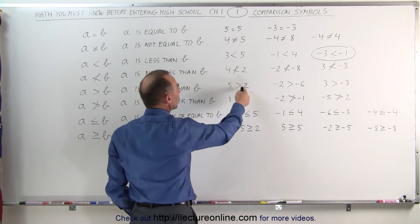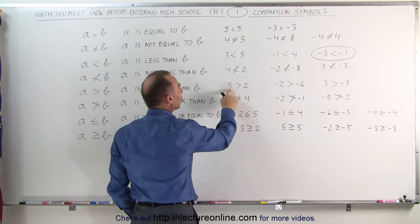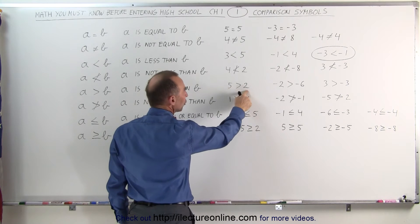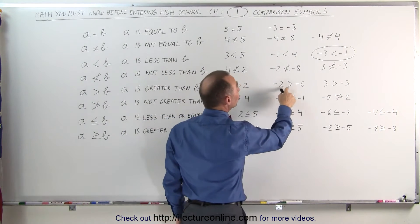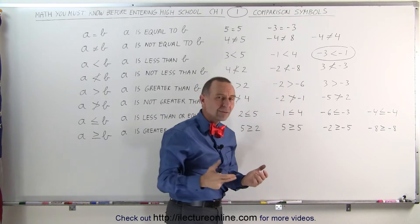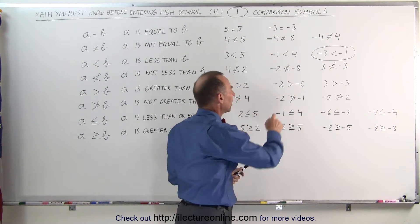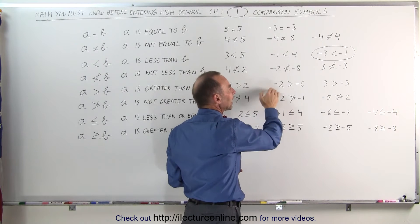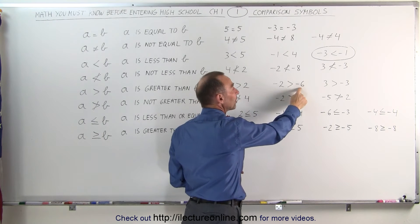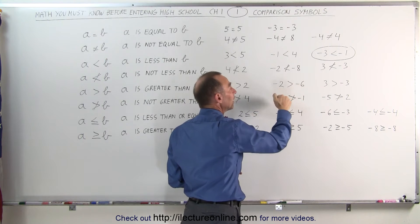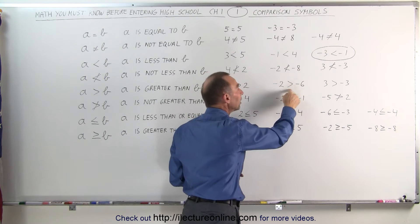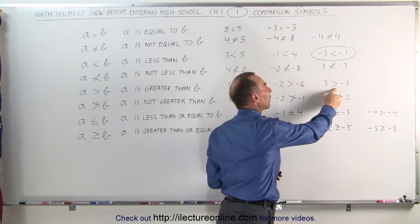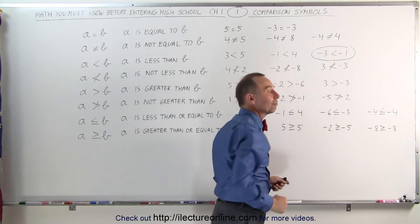When the symbol is reversed in the other direction, the number on the left side is greater than the number on the right side. So 5 is greater than 2. Negative 2 is greater than negative 6 — negative 6 is farther to the left on the number line than negative 2, so negative 6 is less than negative 2, making negative 2 greater than negative 6. Also, 3 being a positive number is greater than negative 3, which is a negative number.